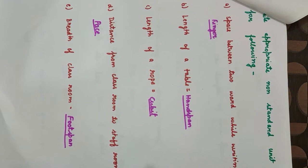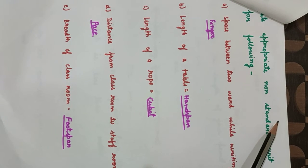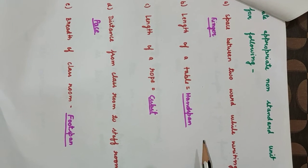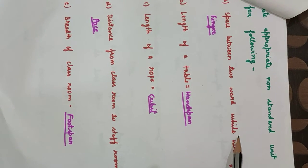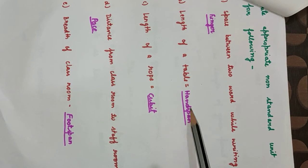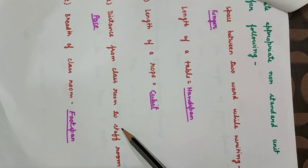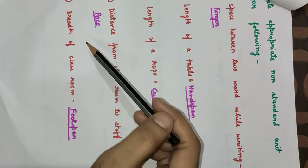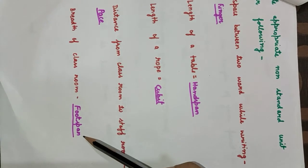Now here is our exercise, which is based on non-standard units of length. Space between two words while writing: finger. Length of a table: hand span. Length of a rope: cubit. Distance from classroom to staff room: pace. Breadth of a classroom: foot span. Thank you.